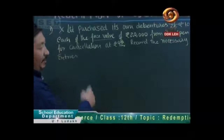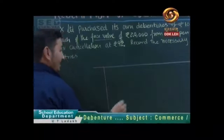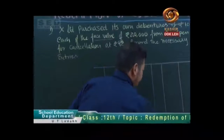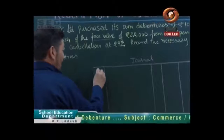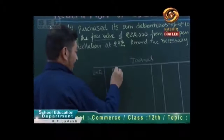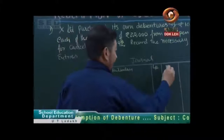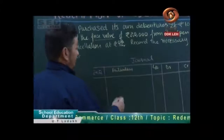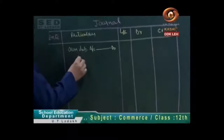Now what will our journal entry be? What do we need to make in the general journal? So children, we need to name those journal entries. Here we have our date, particulars, ledger folio, page number, debit side, and credit items. First of all, we will write the entry: Debenture account — we will debit it. To Bank.